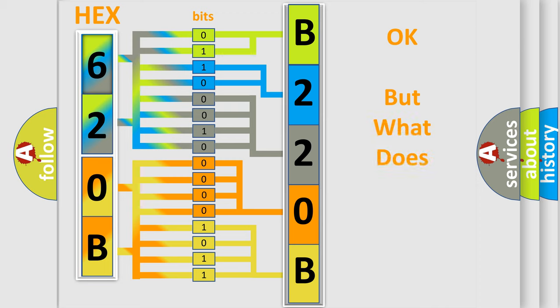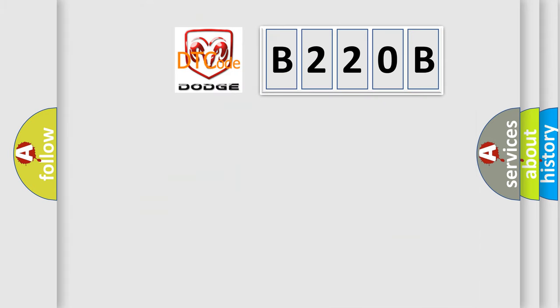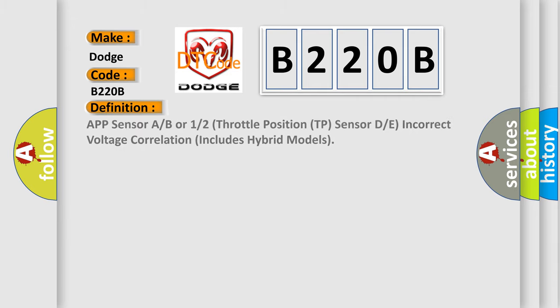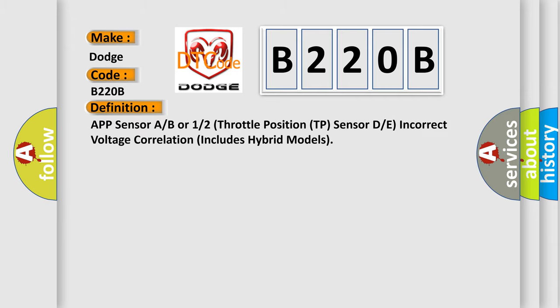The number itself does not make sense to us if we cannot assign information about what it actually expresses. So, what does the diagnostic trouble code B220B interpret specifically for Dodge car manufacturers? The basic definition is: App sensor A or B or 1 or 2, throttle position TP sensor D or E — incorrect voltage correlation; includes hybrid models.